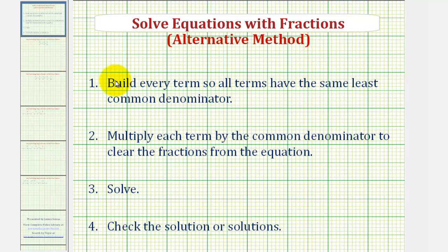So for solving equations with fractions or rational equations, we're first going to build each term so all the terms have the same least common denominator or at least a common denominator. Once we do this, we'll then multiply each term in the equation by that common denominator to clear the fractions from the equation. Then we'll solve the resulting equation and check our solution or solutions.